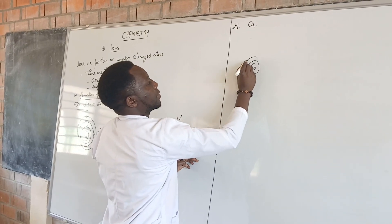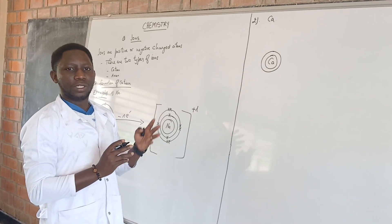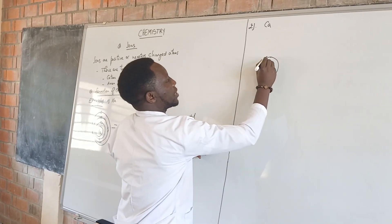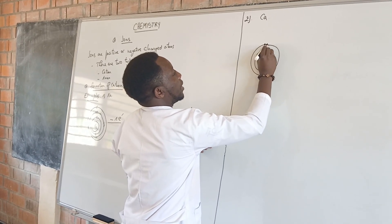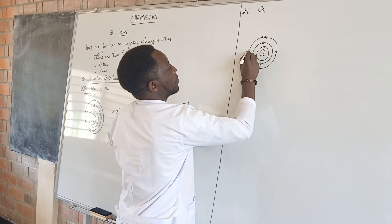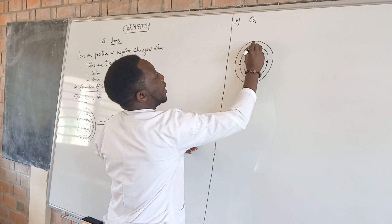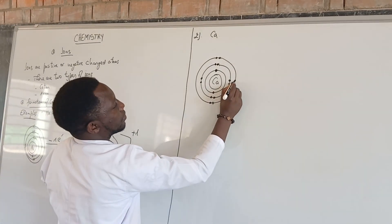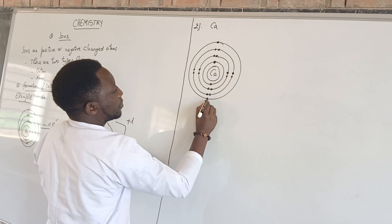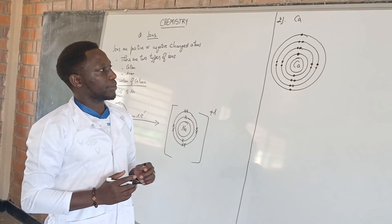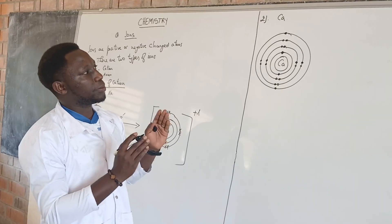This is the nucleus. The first shell contains two. Remember, when we are writing the electronic configuration, we can use dots. The second shell contains eight. The third also contains eight. The last contains two. This is the structure of calcium. This calcium, as it has two electrons in the outermost shell, it loses these electrons in order to become stable.